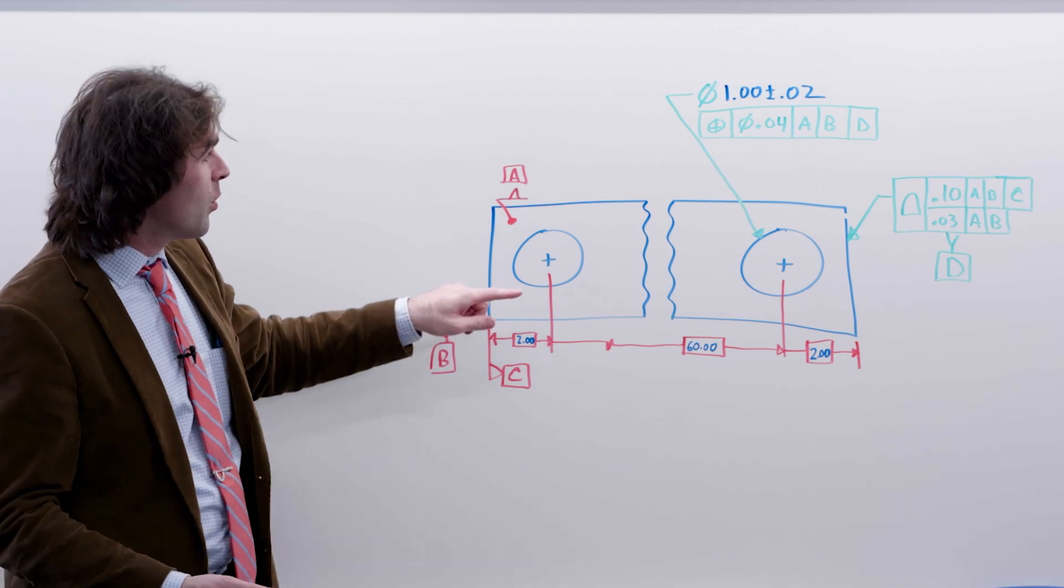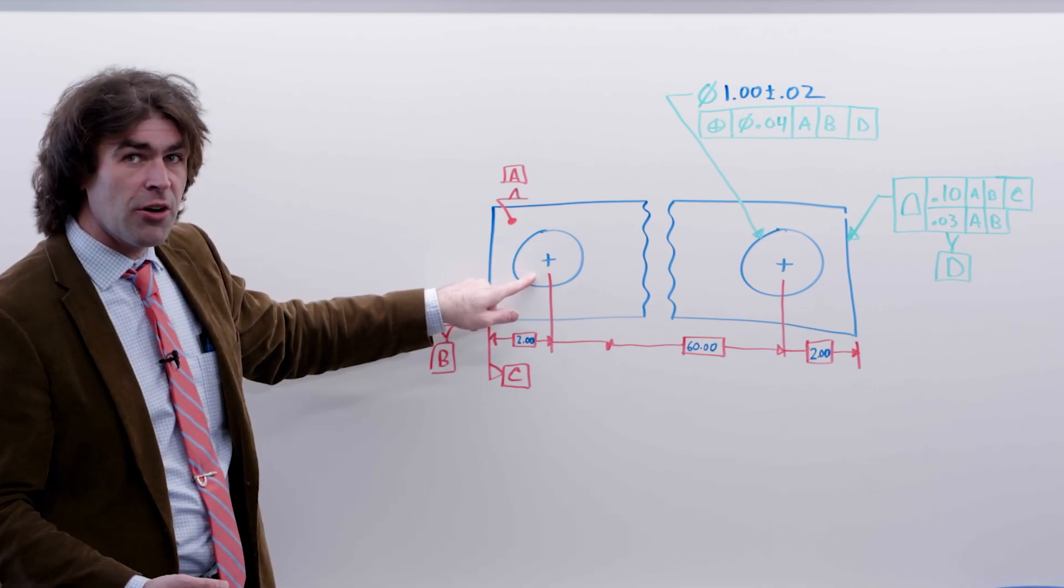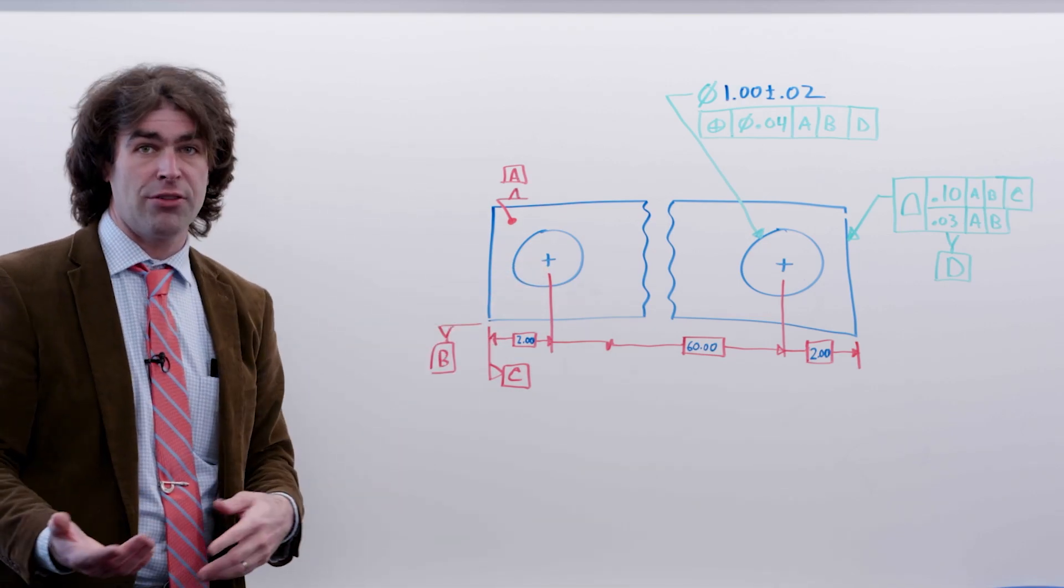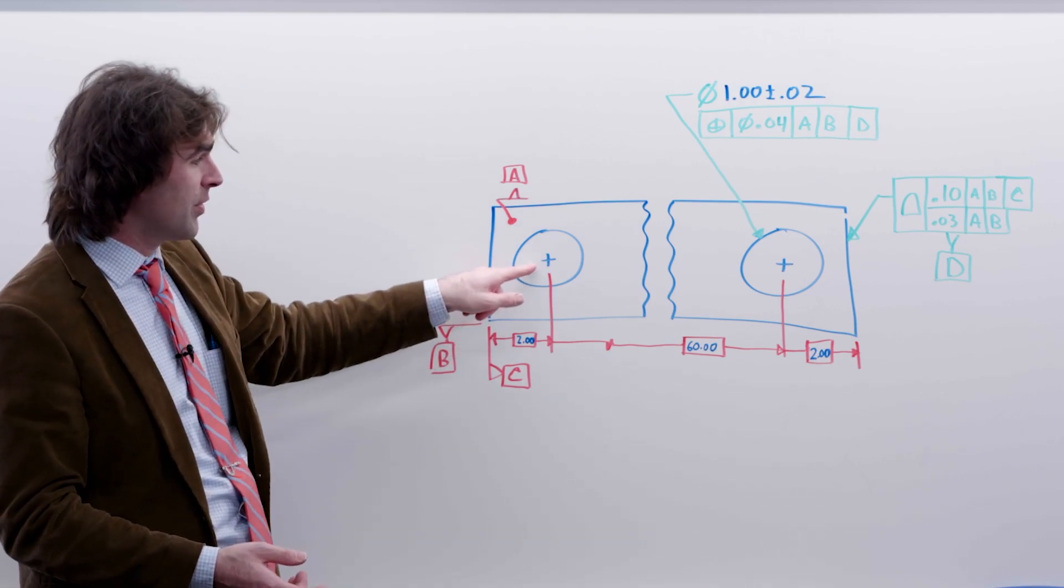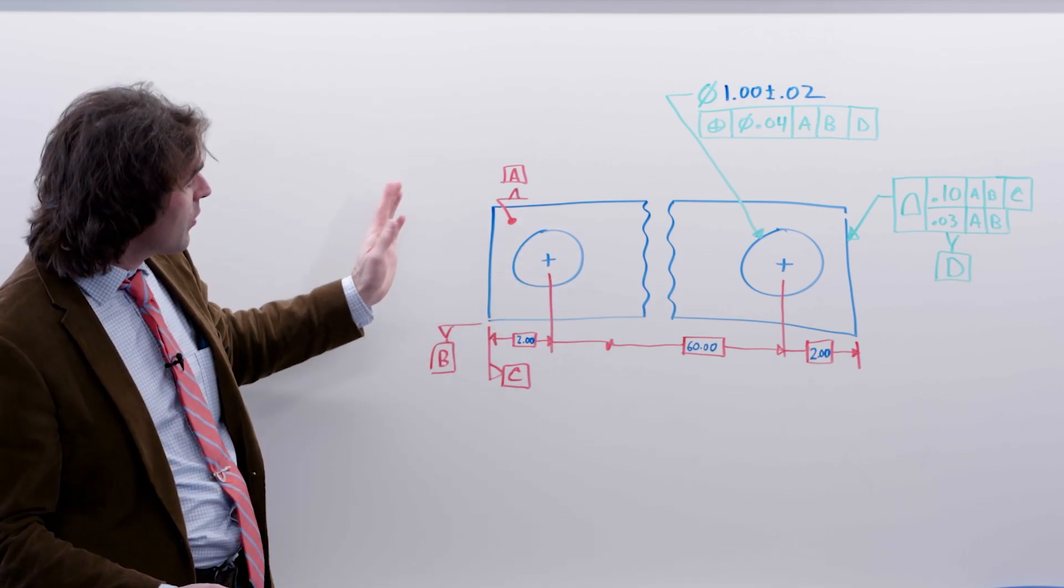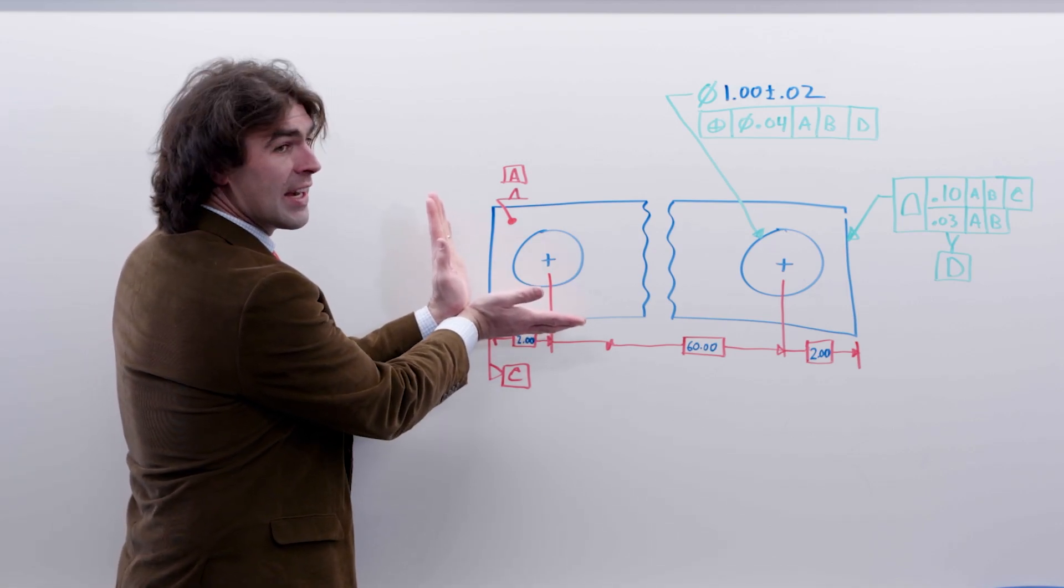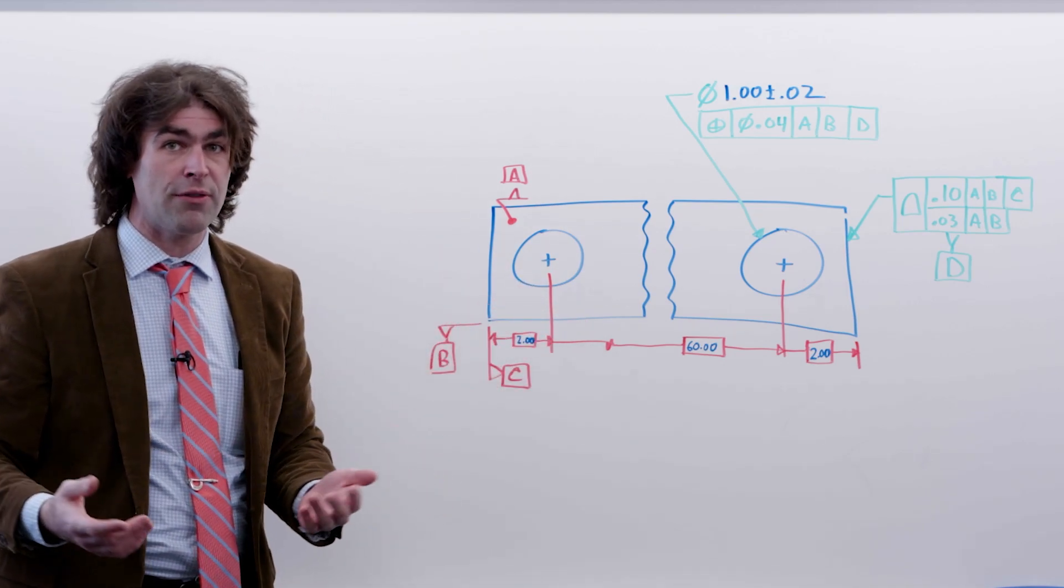And the reason we would do that, we're going to apply a position here to A, B, and C, which I haven't shown on the drawing, but it would be position A, B, C. So you'd be measuring from right here, which is straightforward enough.